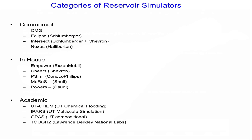Some categories of reservoir simulators: CMG and Eclipse are the most popular, owning about 80% of market share. There's also Intersect, a collaboration between Schlumberger and Chevron. Every super major company and large service company has their own in-house simulators. They all solve essentially the same equations, though sometimes there are proprietary equations of state or field-specific data integrated into the code. Academic simulators include UT Chem, developed here in our department for 30 years; IPAR from Mary Wheeler's group; GPAS, a compositional simulator from Kami Sepinori's group; and TOUGH2, an open-source simulator from Lawrence Berkeley Lab.